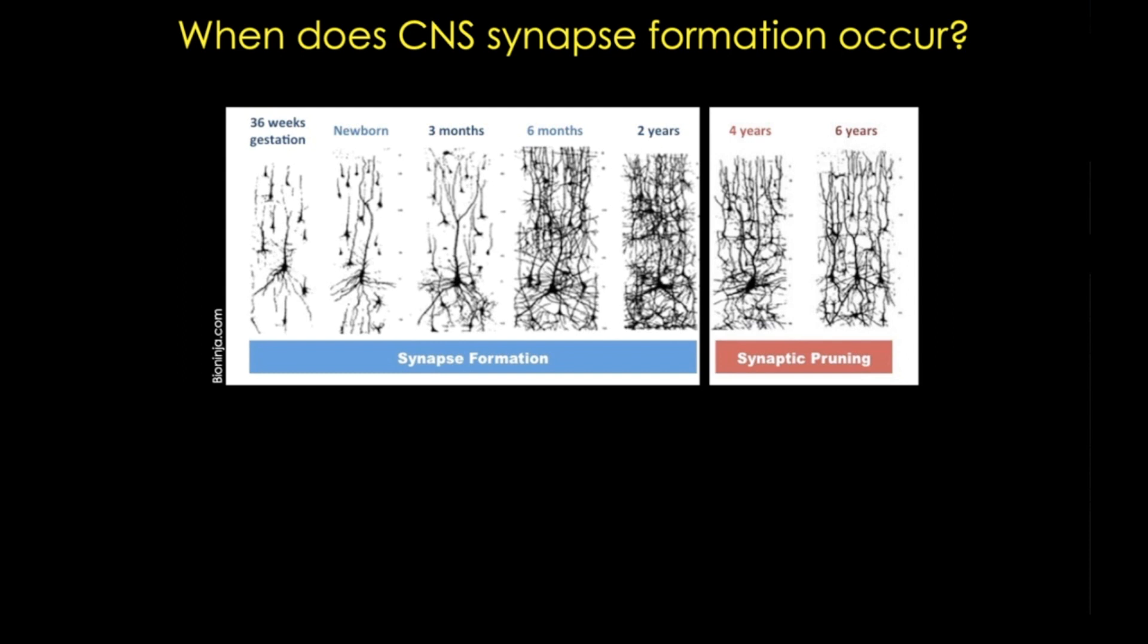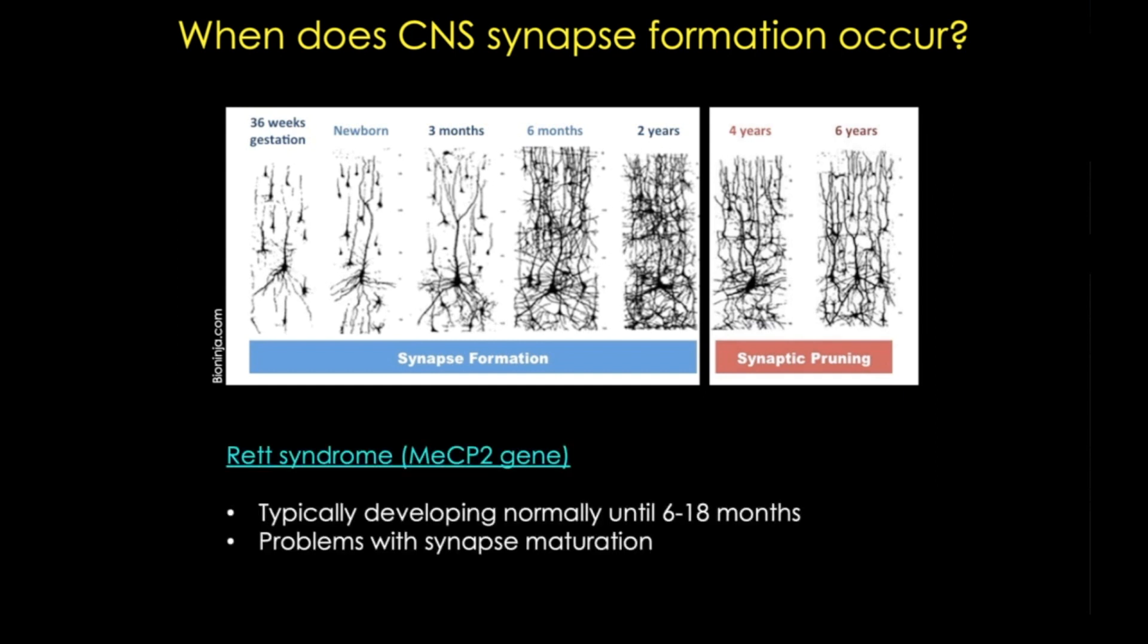So of course there can be problems with synaptic pruning and with maturation of synapses, and these can lead to diseases such as Rett syndrome, which has profound effects on multiple systems.